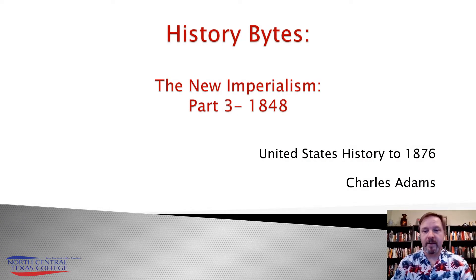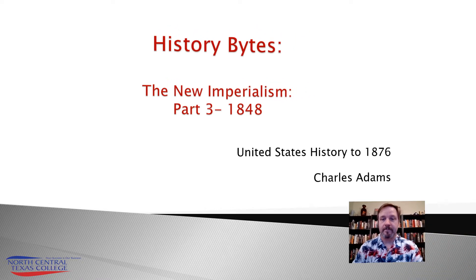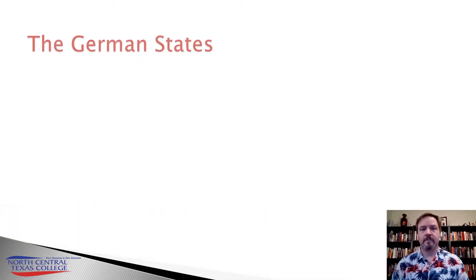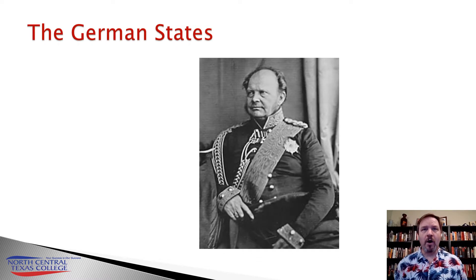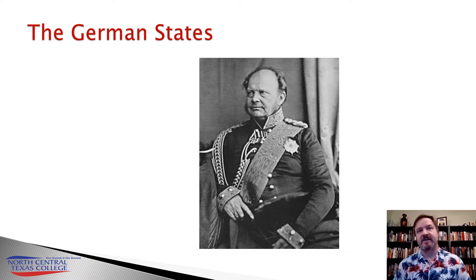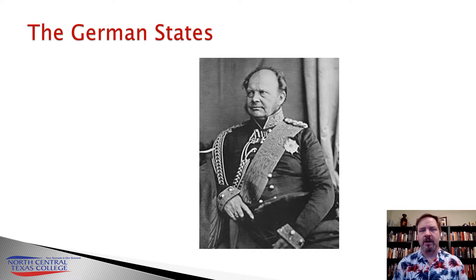Welcome to part three on the new imperialism. Now we're going to look at 1848. In March of 1848, several groups of German liberal revolutionaries are going to rise up and call for a unified German state. There's going to be a problem with this, though, in that each of these different liberal groups in these different German states wanted something different out of this revolution.